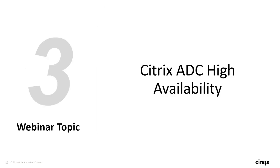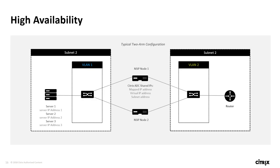The third topic is Citrix ADC high availability. Up till now we've concentrated on using Citrix ADC to protect our back-end infrastructure, applications, and resources. But what about protecting the Citrix ADC itself? We do that through high availability. What you see on the screen is a typical two-arm configuration with subnet 1 and subnet 2, VLAN 1 and VLAN 2, and we protect the connectivity between the two with a pair of Citrix ADCs.